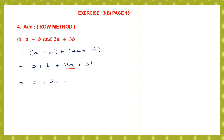Now we take the b's together: b plus 3b. Now we can add the like terms. The first a has no number, so it is understood to be 1. Similarly b is also 1. So 1 plus 2 is 3, giving us 3a. And 1 plus 3 is 4, giving us 4b. So our answer is 3a plus 4b.